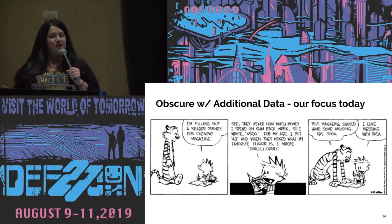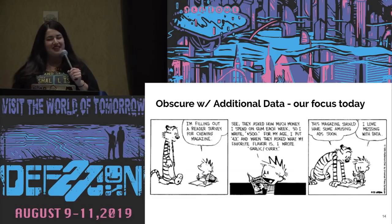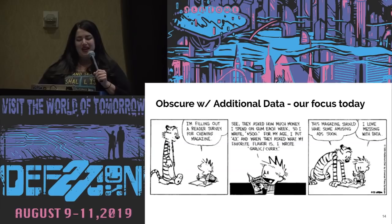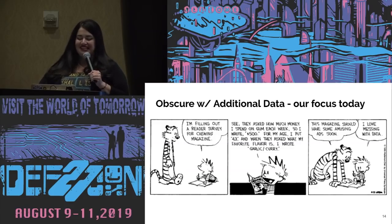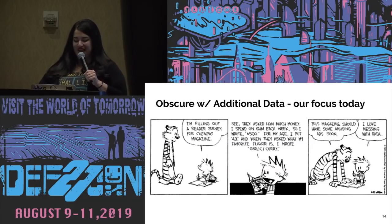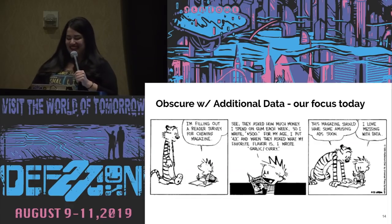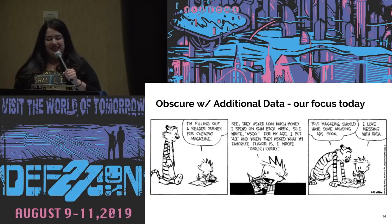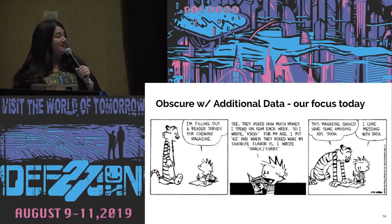This Calvin and Hobbes strip gets to the point. Calvin says he's filling out a reader survey for a chewing magazine: he wrote $500 for how much money he spent on gum each week, put 43 for his age, and wrote garlic and curry as his favorite flavor. Hobbes says this magazine should have some amusing ads soon. Calvin says: 'I love messing with data.'